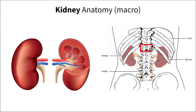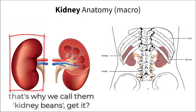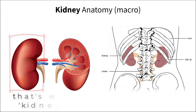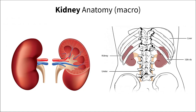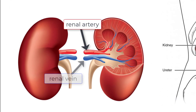Interestingly, the right kidney sits a bit lower than the left because it is inferior to the liver. Each kidney is shaped like a bean and has three main connecting tubes for materials to pass through, which include the renal artery, renal vein, and ureter.